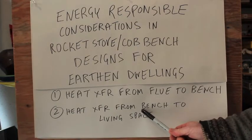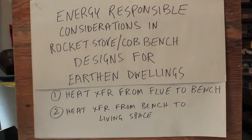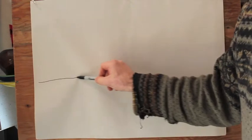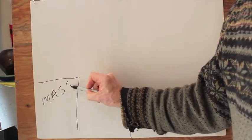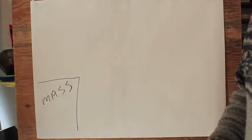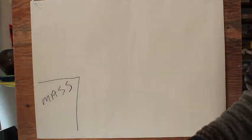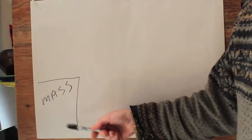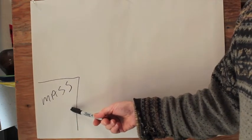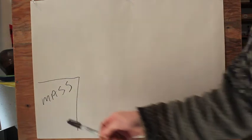Okay, part 2: heat transfer from the bench to the living space. So if this is the mass here, the caloric or available heat energy that's stored in the mass depends on its density. Yes, stored energy is measured in calories, so it's called caloric heat.